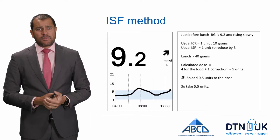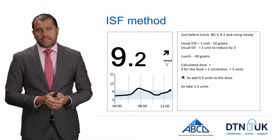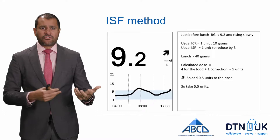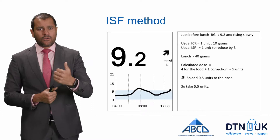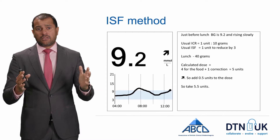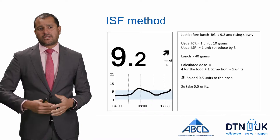Here's a worked example of the ISF rule: blood glucose is 9.2 pre-meal, going up with an oblique arrow. The insulin-to-carb ratio is 1 unit per 10 grams, sensitivity is 1 unit reduces glucose by 3 mmol. For a 40-gram lunch: 4 units for food plus 1 unit correction (to take from 9 down to 6) = 5 units calculated dose. Because of the oblique up arrow, add 0.5 units — so take 5.5 units.